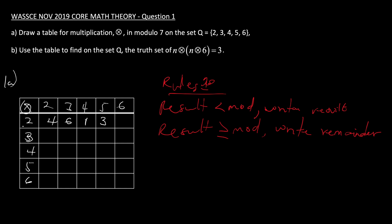Two times six is twelve — twelve is also greater than seven, so we divide twelve by seven and write the remainder, which is five. You do the same for all the empty boxes. When we follow the rules, this should be our final table.